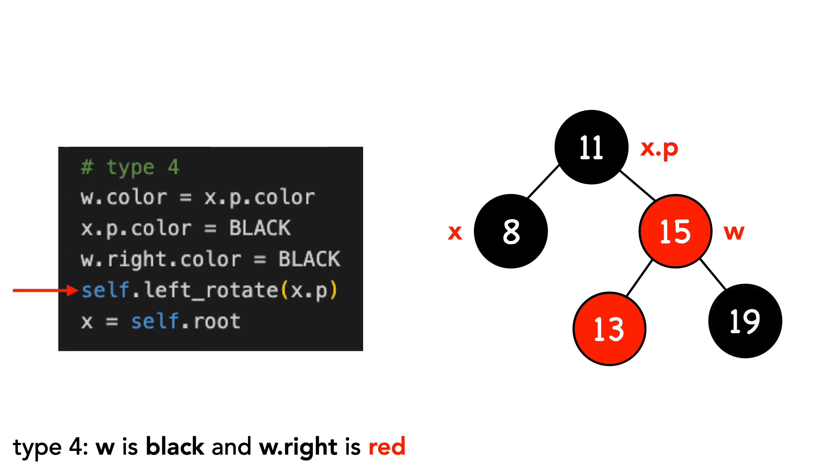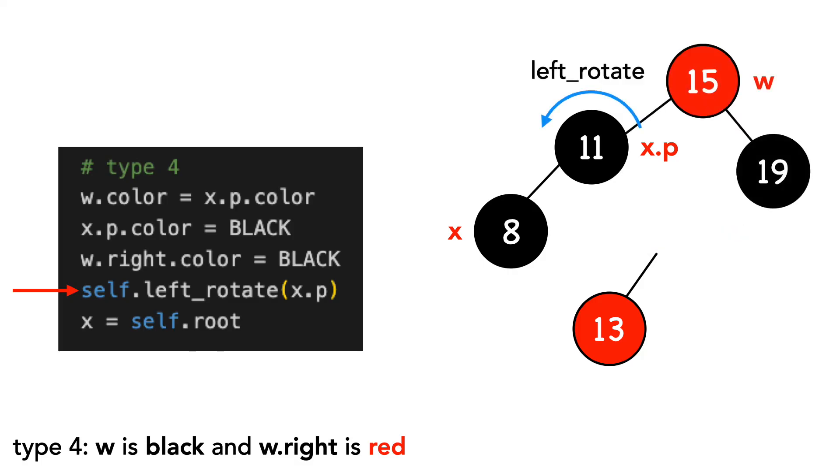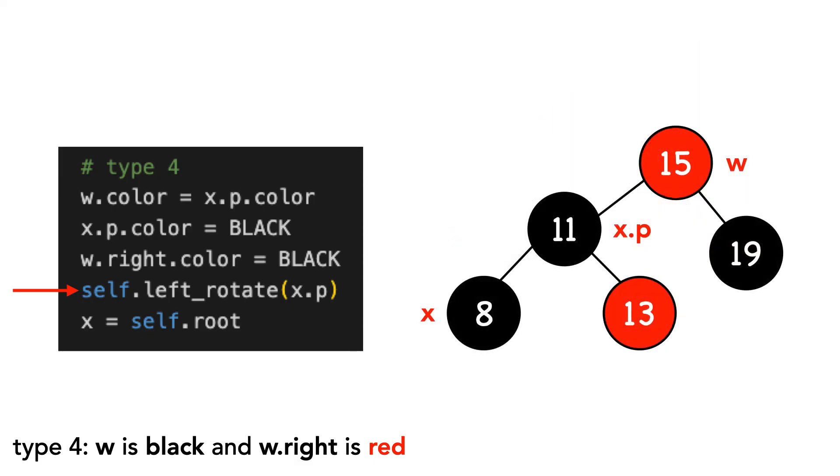We do a left rotation on x's parent. And finally, we set x equal to the tree's root.